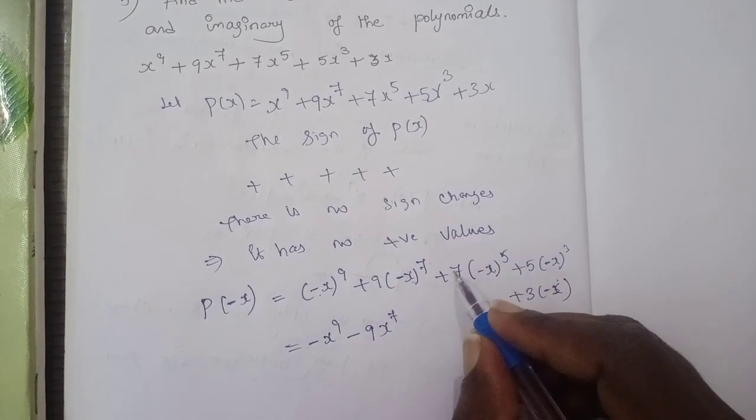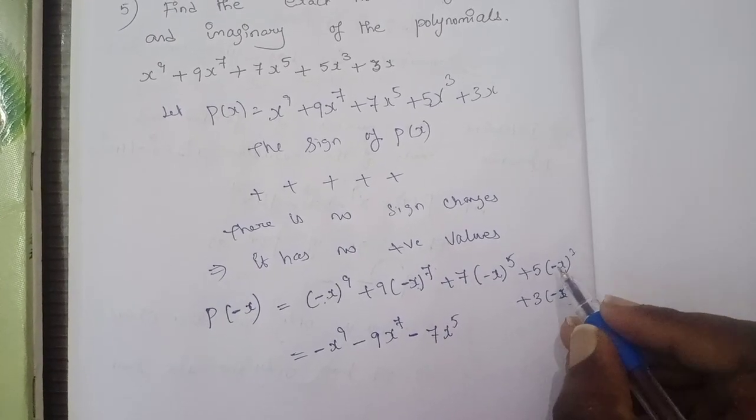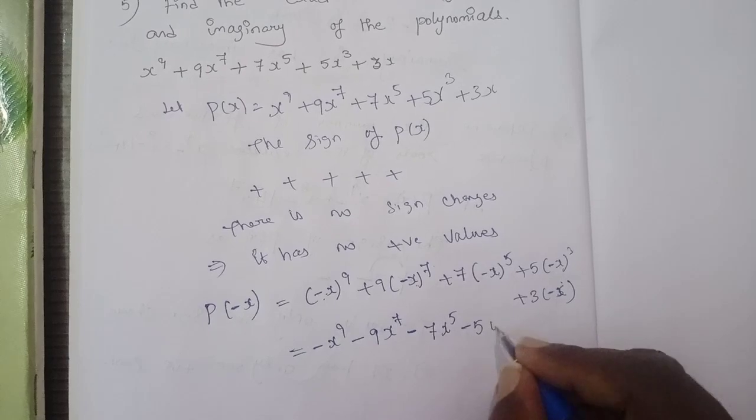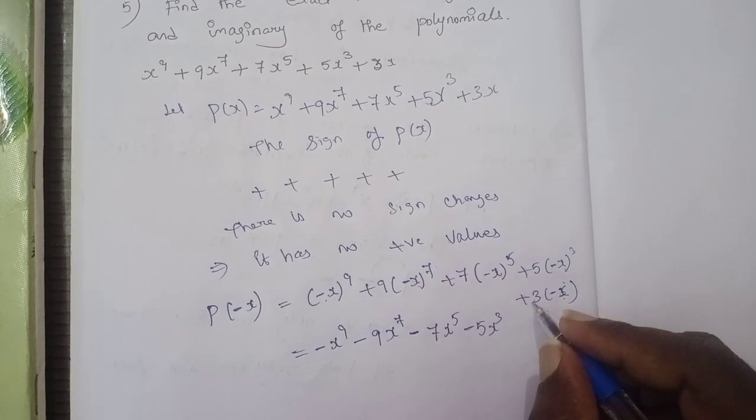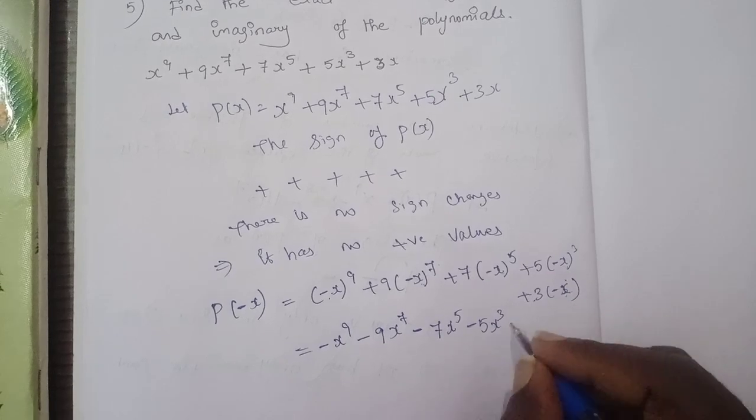This power of odd number is negative. This is -x^5, this is plus and minus minus, minus 7x^5. This power of odd number is negative, so -9x^3. This is minus, plus 3 into -x equals -3x.